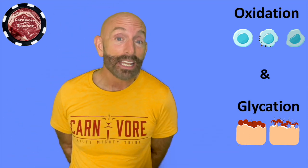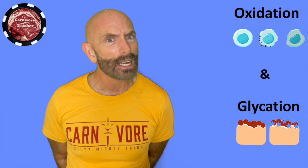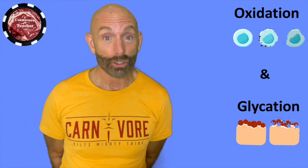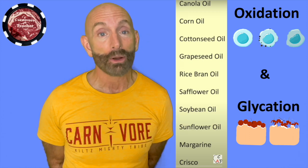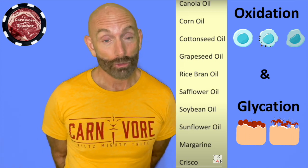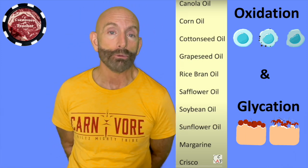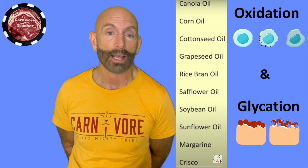Foods can oxidize a little bit in our body, but the things that oxidize the most are seed oils. This is why we tell you to stay away from all vegetable seed oils: canola, corn, soy, safflower, sunflower, rice bran, Crisco, margarine. Stay away from all foods that contain them in the ingredients. Don't cook with them. Don't eat fried foods unless they're fried in beef tallow.